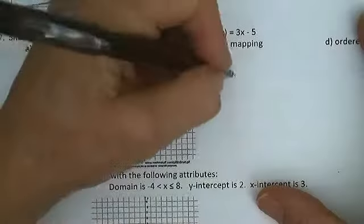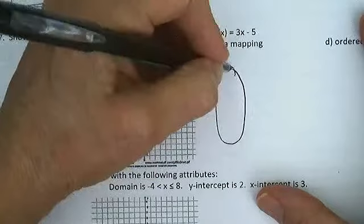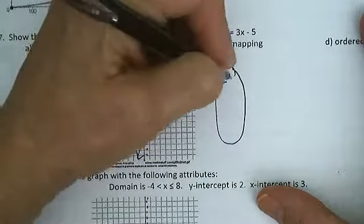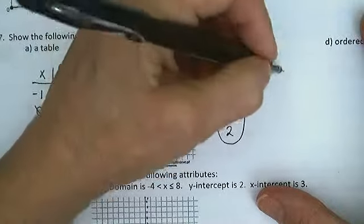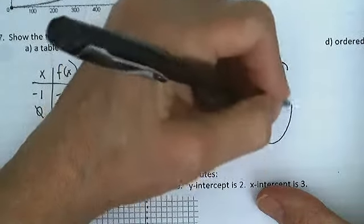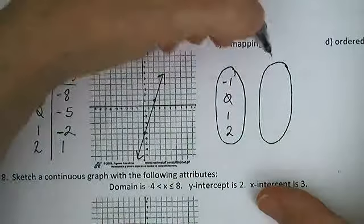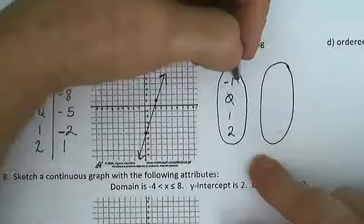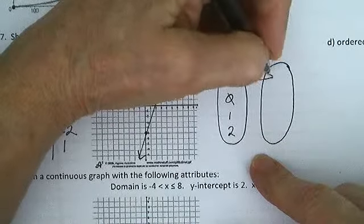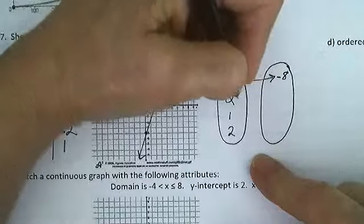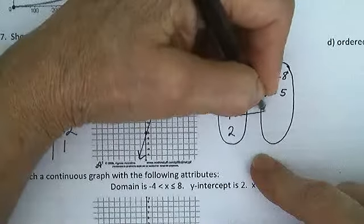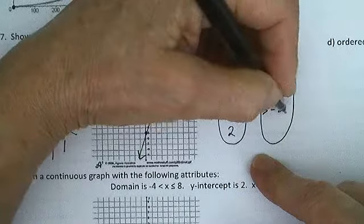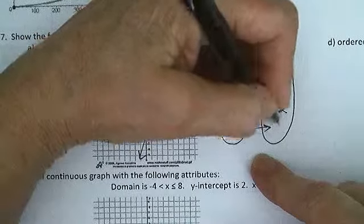As a mapping, my input negative 1, 0, 1, and 2. My output negative 1 maps to negative 8, 0 maps to negative 5, 1 maps to negative 2, 2 maps to 1.